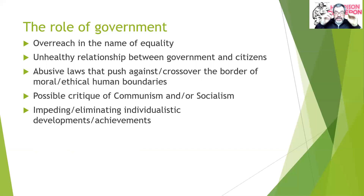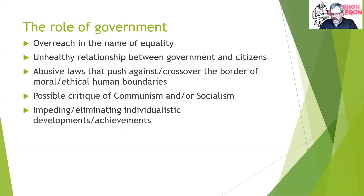Vonnegut is also warning us about an unhealthy relationship between government and citizen — a clash between the two. He's highlighting an us-versus-them dynamic and how the government can be abusive to the people. Specifically, he warns about laws that appear to be healthy or helpful on the surface but are actually abusive, crossing over the border of what we might consider moral, ethical, and human boundaries.